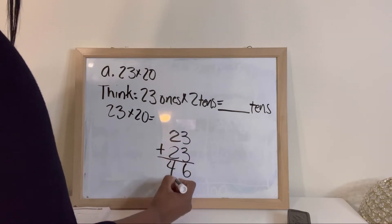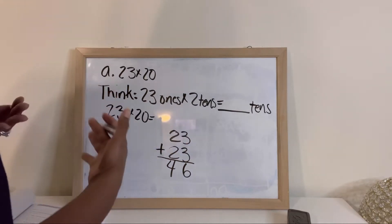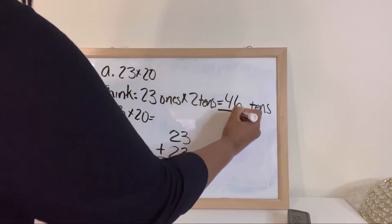So remember when we're multiplying by 2 we're just doubling it. So that'll give us 46 tens.